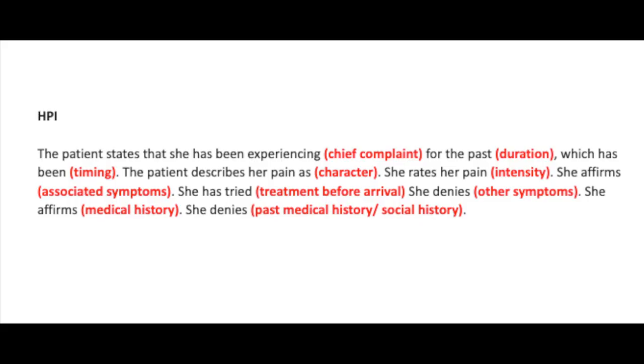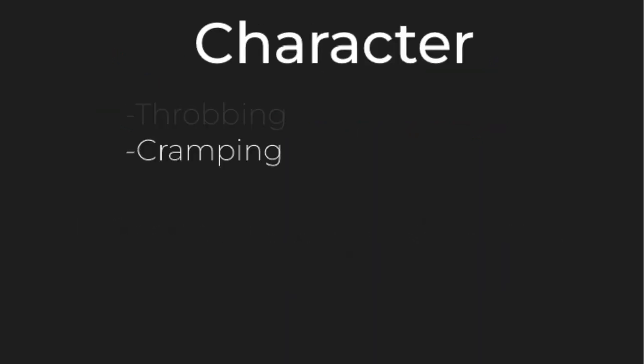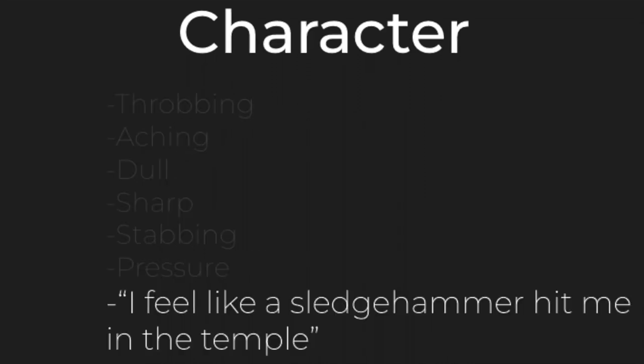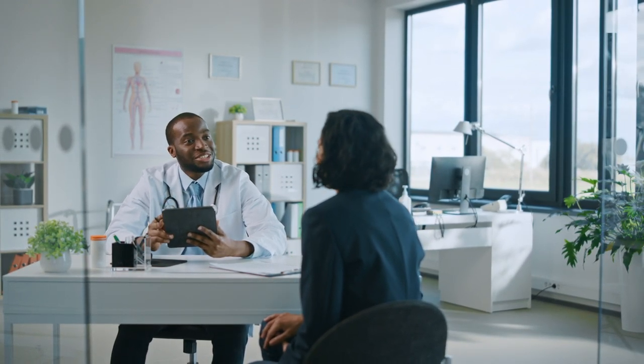The patient describes her pain as character — meaning how does it feel? Throbbing, cramping, dull, sharp, stabbing, pressure. Or you can spice it up, because the patient is likely going to give their own analysis, such as, 'I feel like a sledgehammer hit me in the temple.' When you're not sure how to describe the character, using the patient's own words in quotations will always suffice.